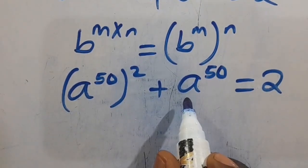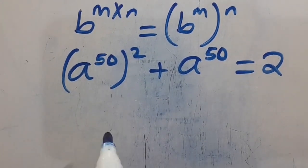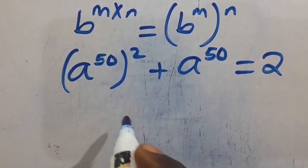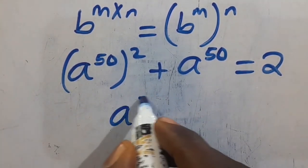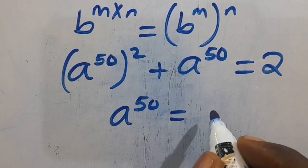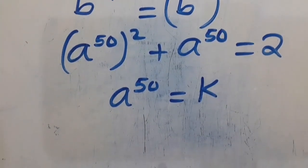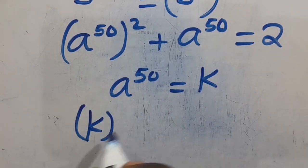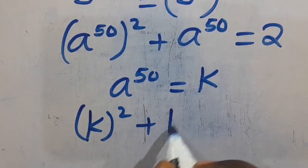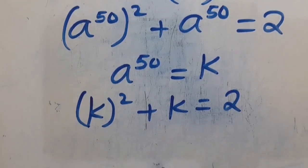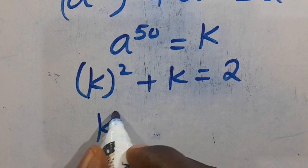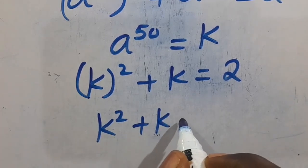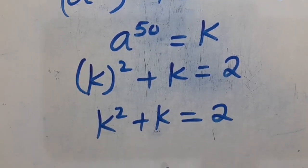We have A to the power of 50 in common, so let A to the power of 50 equal K. Then the expression becomes K squared plus K equals 2.